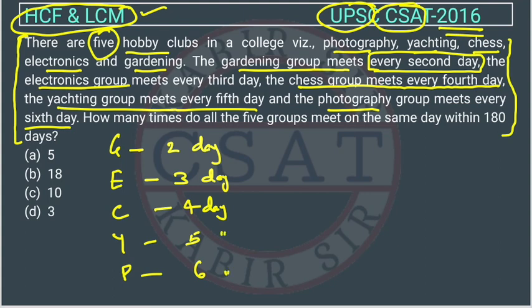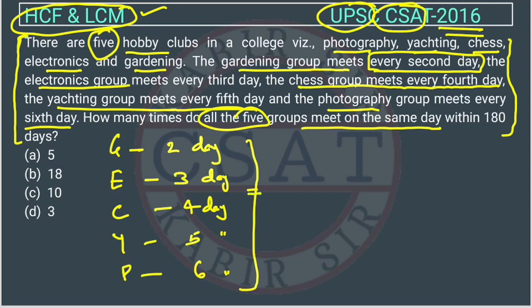How many times do all five groups meet on the same day within 180 days? In simple terms, the question asks: in 180 days, how many times will all these people meet together? So what we have to do is find the LCM.